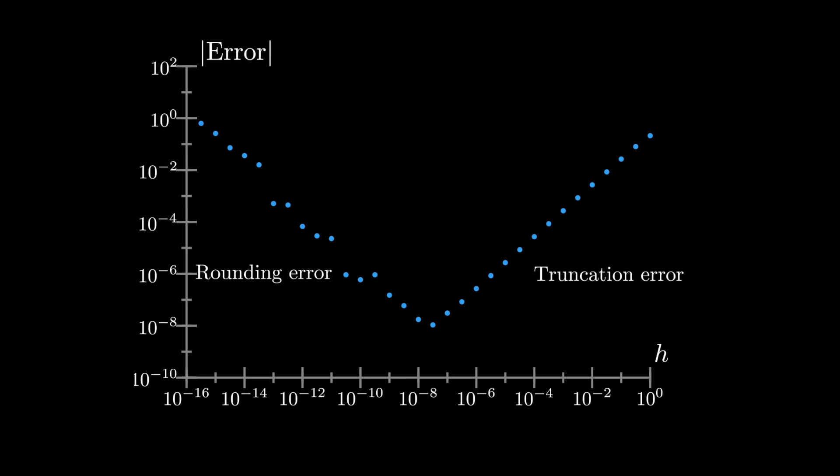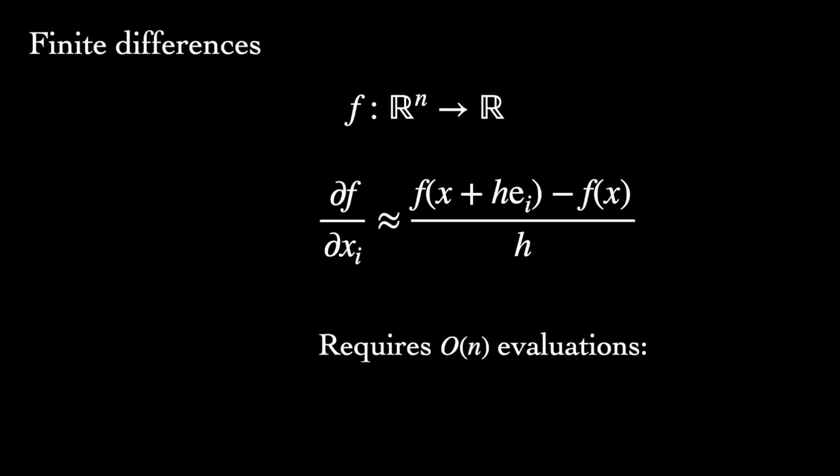Now in machine learning, especially in the context of training neural networks, some approximation error may be okay. After all, stochastic gradient descent only uses a noisy estimation of the true gradient. The bigger problem with numerical differentiation here is that we need O of n evaluations for an n-dimensional gradient. This time complexity simply won't cut it when we have a model with millions of parameters.